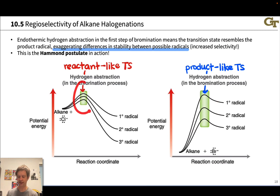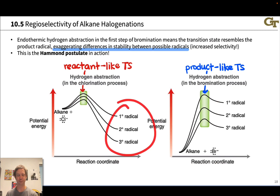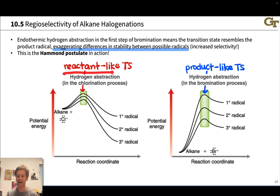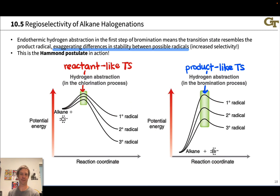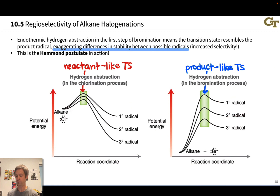The transition state in chlorination doesn't have a good sense that it's going to a radical on the product side, so differences in stabilities of the product radicals don't have a big impact on the transition state energies for this reactant-like transition state — it looks much more like the alkane. On the flip side, with endothermic hydrogen abstraction, the transition state looks much more like the radicals. So differences in stabilities of primary, secondary, and tertiary radicals are felt profoundly in these product-like transition states, leading to much greater selectivity in brominations.